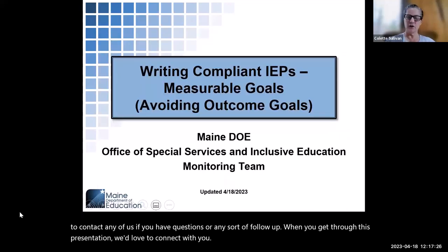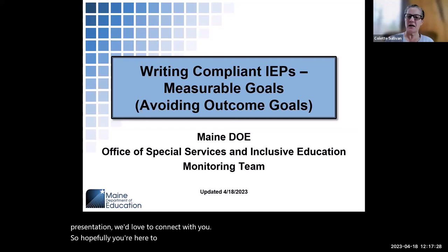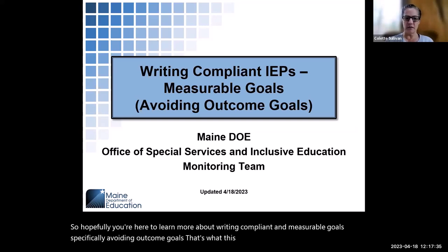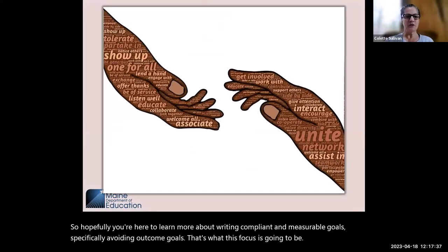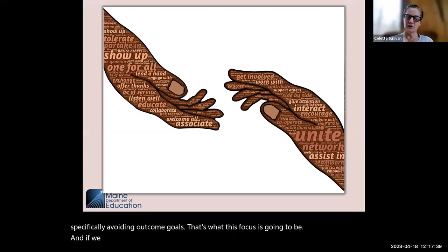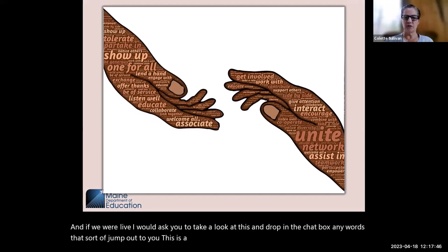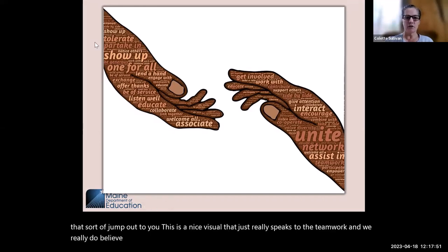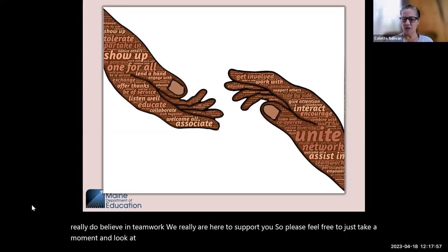Hopefully you're here to learn more about writing compliant and measurable goals, specifically avoiding outcome goals — that's what this focus is going to be. And if we were live, I would ask you to drop in the chat box any words that jump out to you. This is a nice visual that really speaks to the teamwork, and we really do believe in teamwork. We are here to support you.